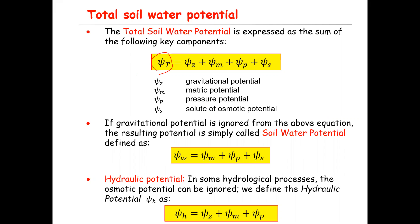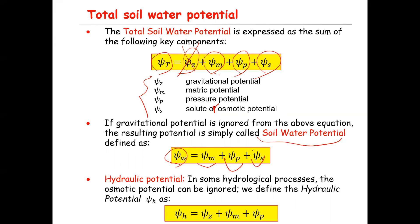Psi z is the gravitational potential, psi m is the matric potential, psi p is the pressure potential, and psi s is the solute or osmotic potential. If you ignore the gravitational potential psi z, the summation of the remaining terms is called soil water potential: psi w equals psi m plus psi p plus psi s.